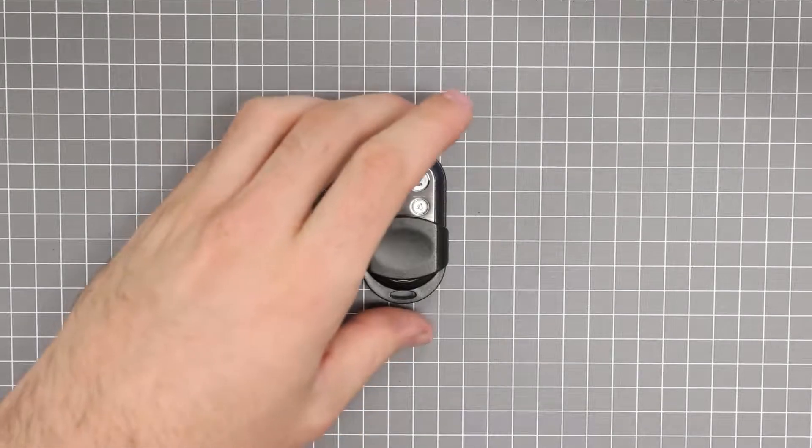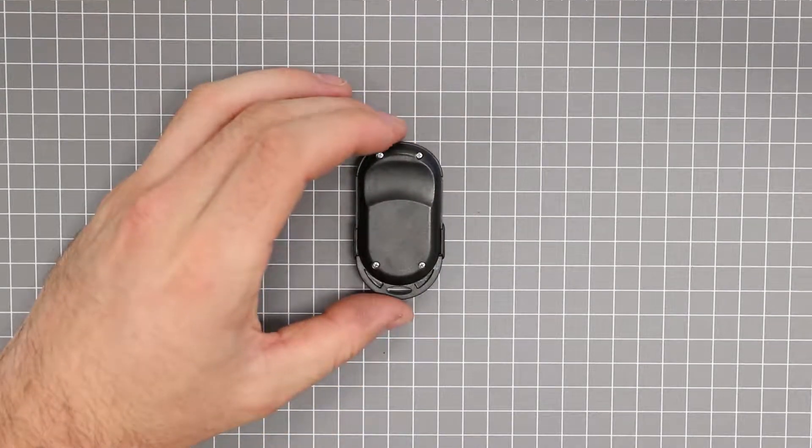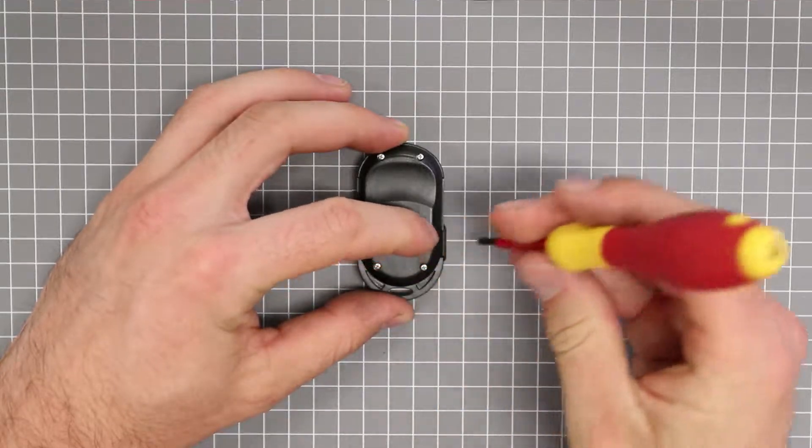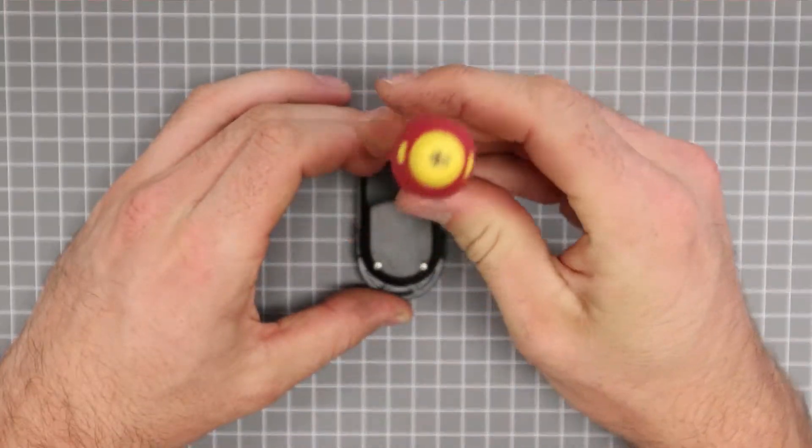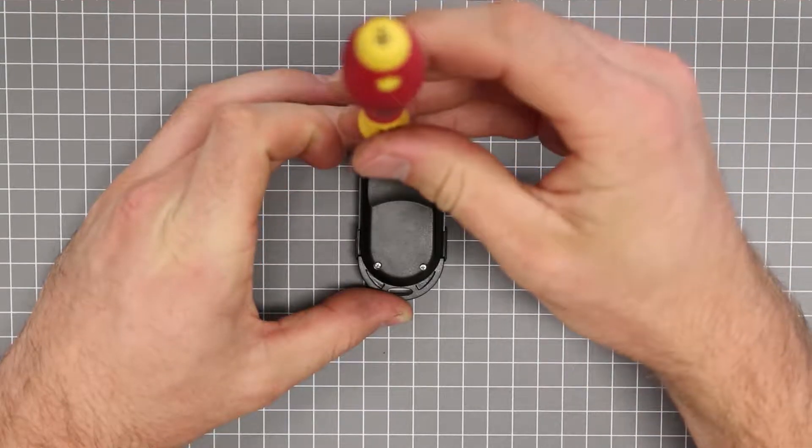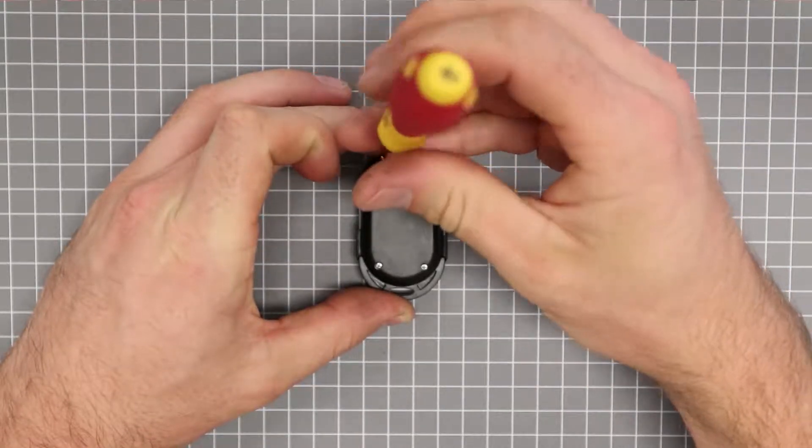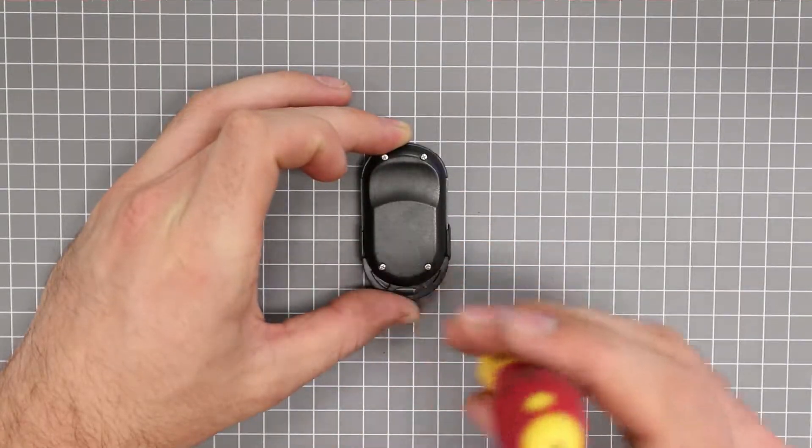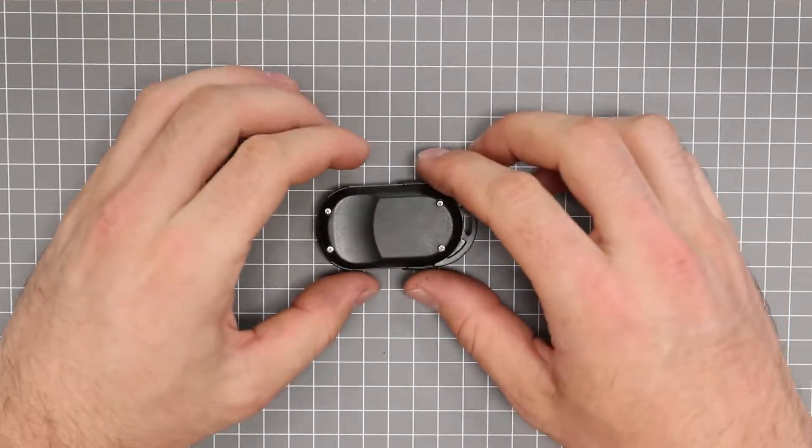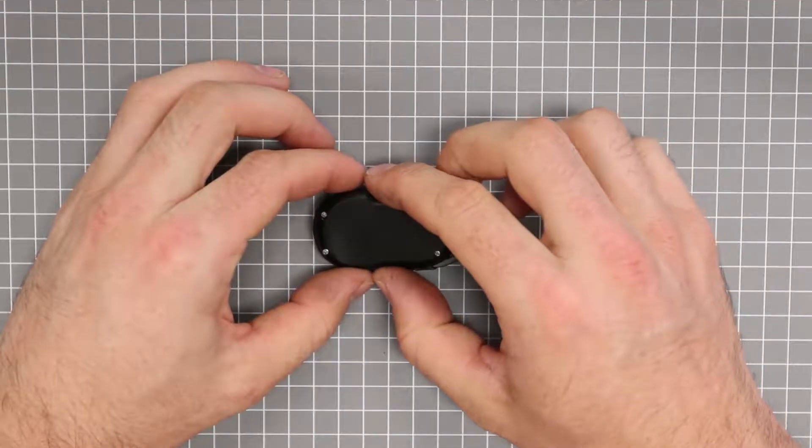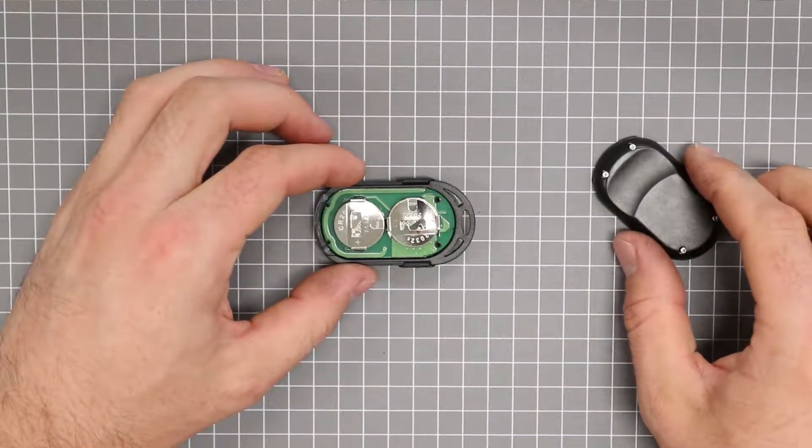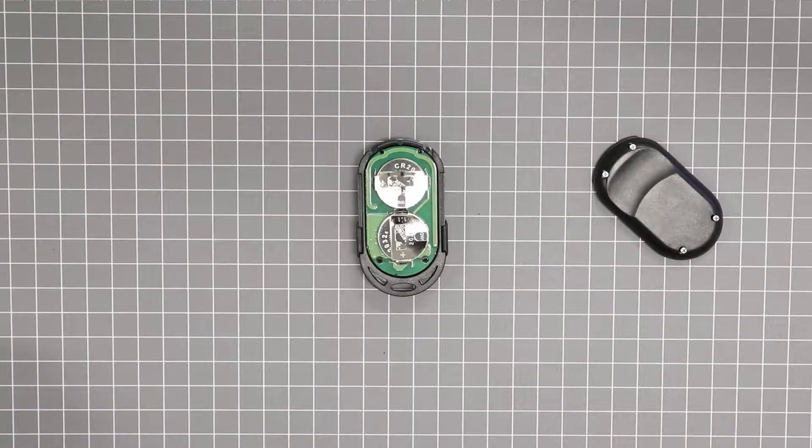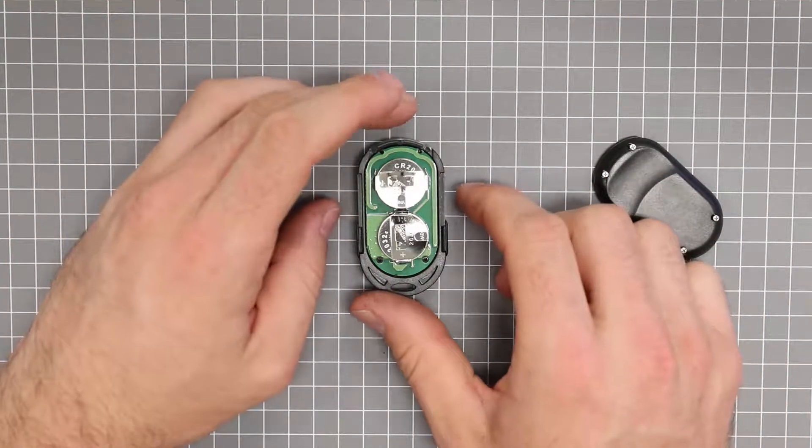The last remote control disassembles the same as the previous remote but contains two internal batteries. Reassembly is the same.